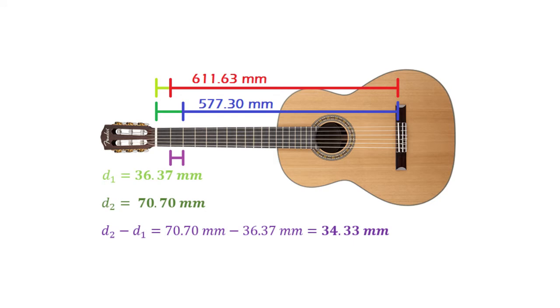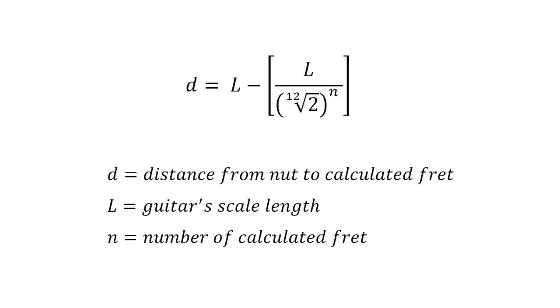For the rest of the frets, you repeat the procedure, or you can use this formula instead. Keep in mind that the fret distances will depend on the scale length for which the guitar is constructed.